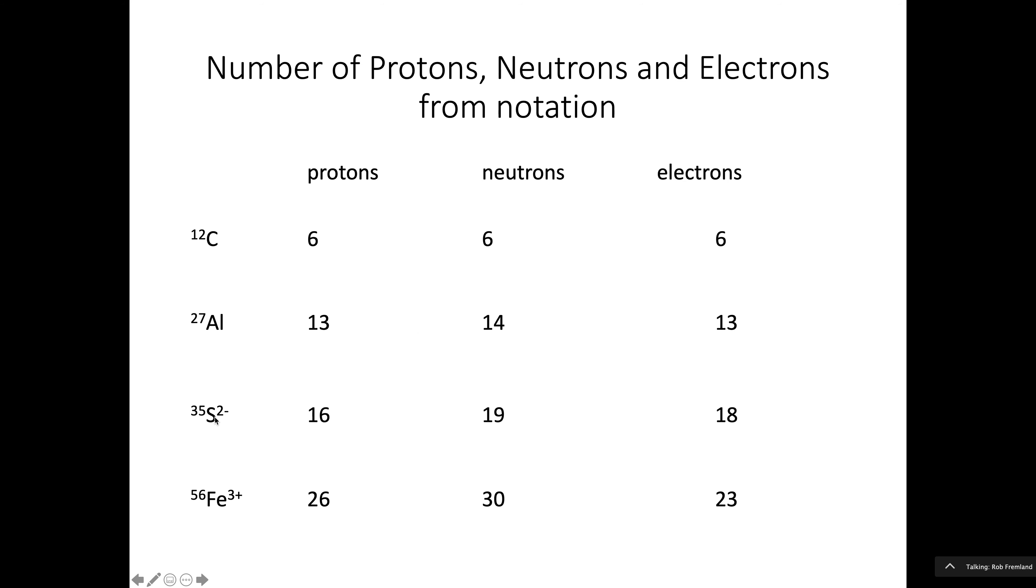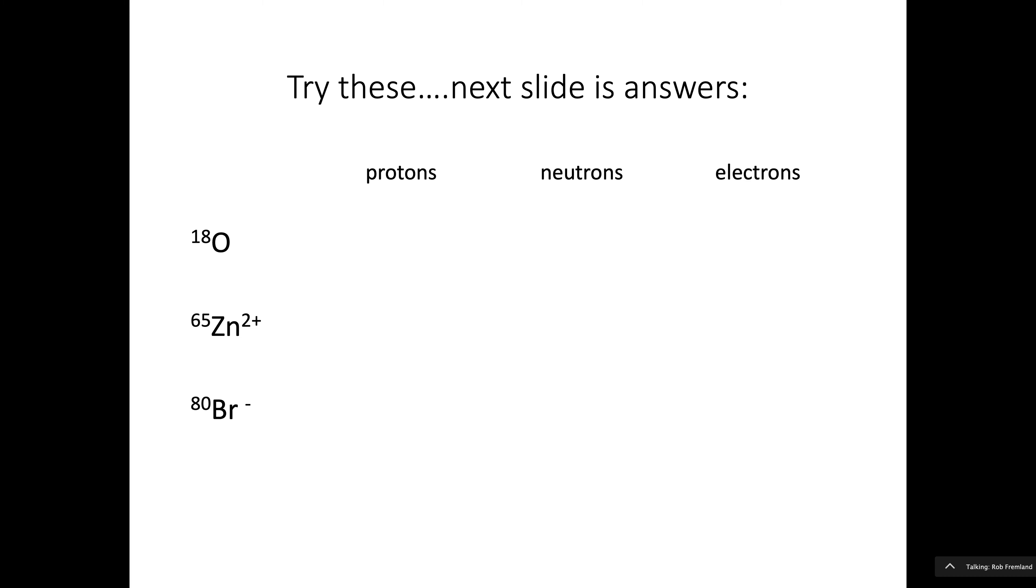Now, this is sulfur with a 2 minus charge. So it's actually the sulfide ion. We'll talk about naming later. Now that means there's two more negatives than there are positives. So that means if there's 16 positives, there have to be 18 negatives. For the iron ion, there's three more positives than there are negatives. Or you can say three fewer negatives than there are positives. Probably a smarter way to do it. It's 26 protons. It must only be 23 neutrons. I'm sorry, electrons.